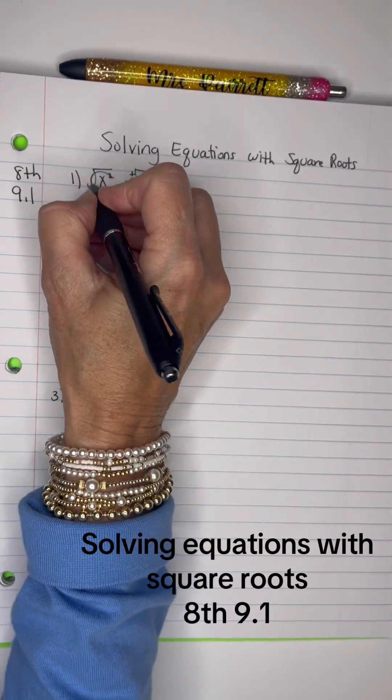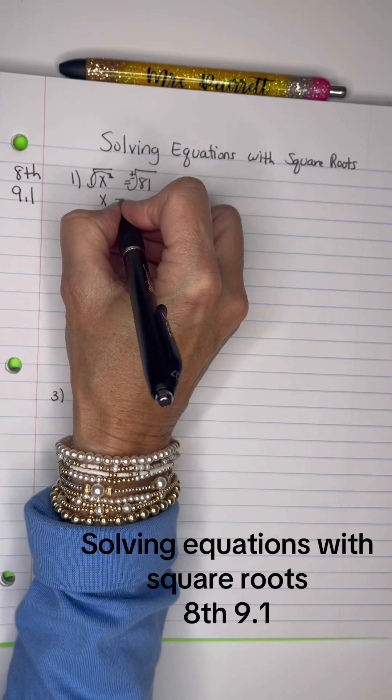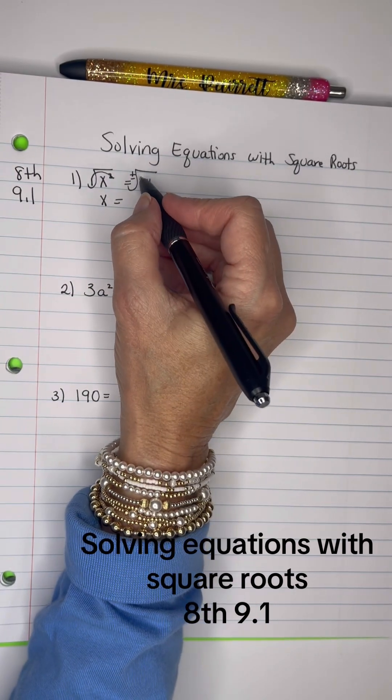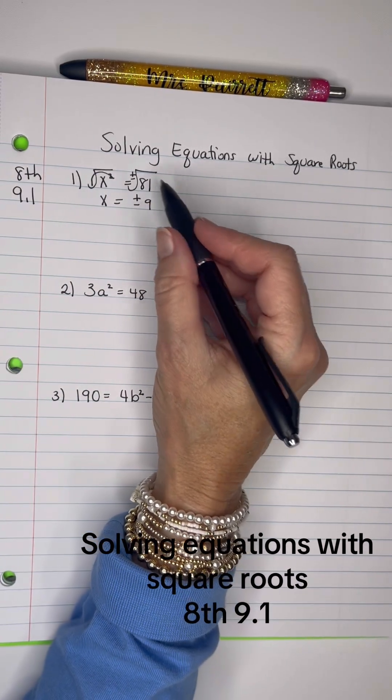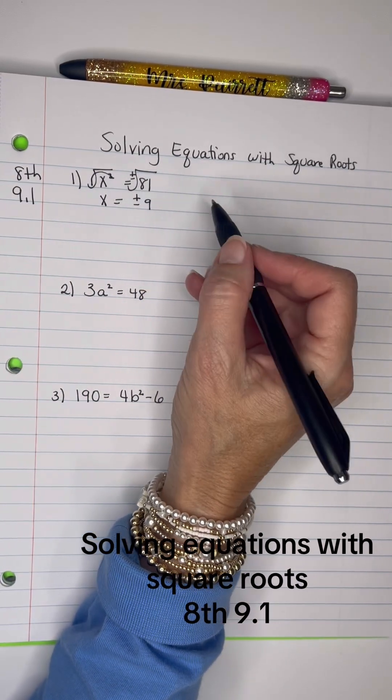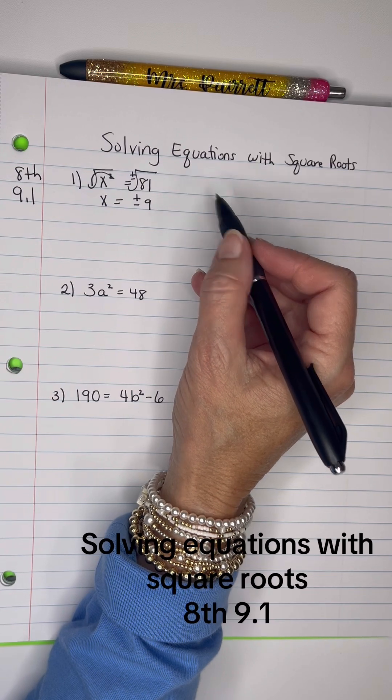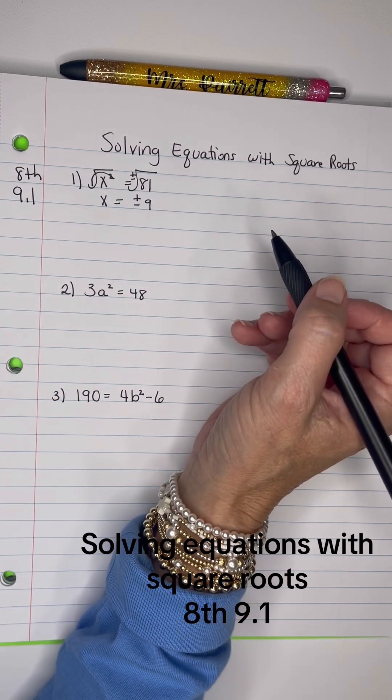So the square cancels the square root out, and x is freed from the radical, and then the square root of 81 is a positive or negative 9, because 9 times 9 is equal to 81, but also negative 9 times negative 9 equals 81. So there's two solutions there.